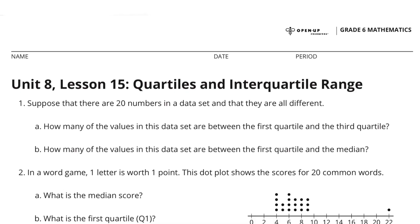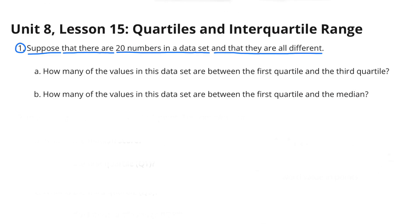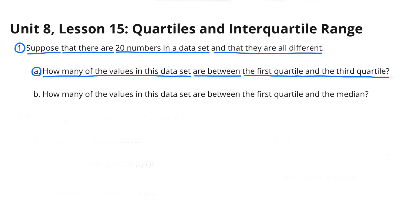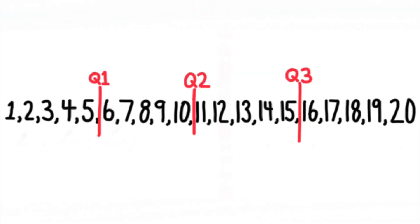Unit 8, Lesson 15: Quartiles and Interquartile Range. Number one: suppose that there are twenty numbers in a data set and that they are all different. Part A: how many of the values in this data set are between the first quartile and the third quartile? Here's a simple example of what a data set would look like with 20 numbers that are all different.